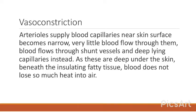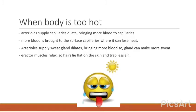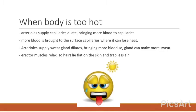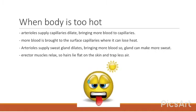Vasoconstriction: arterioles supplying blood capillaries near the skin surface become narrow, so very little blood flows through them. Blood flows through shunt vessels and deep capillaries instead, which are beneath the insulating fatty tissue, so blood does not lose much heat. When the body is too hot, arterioles supplying capillaries dilate, bringing more blood to the surface where it can lose heat. More sweat is produced, and erector muscles relax so hairs lie flat and trap less air.